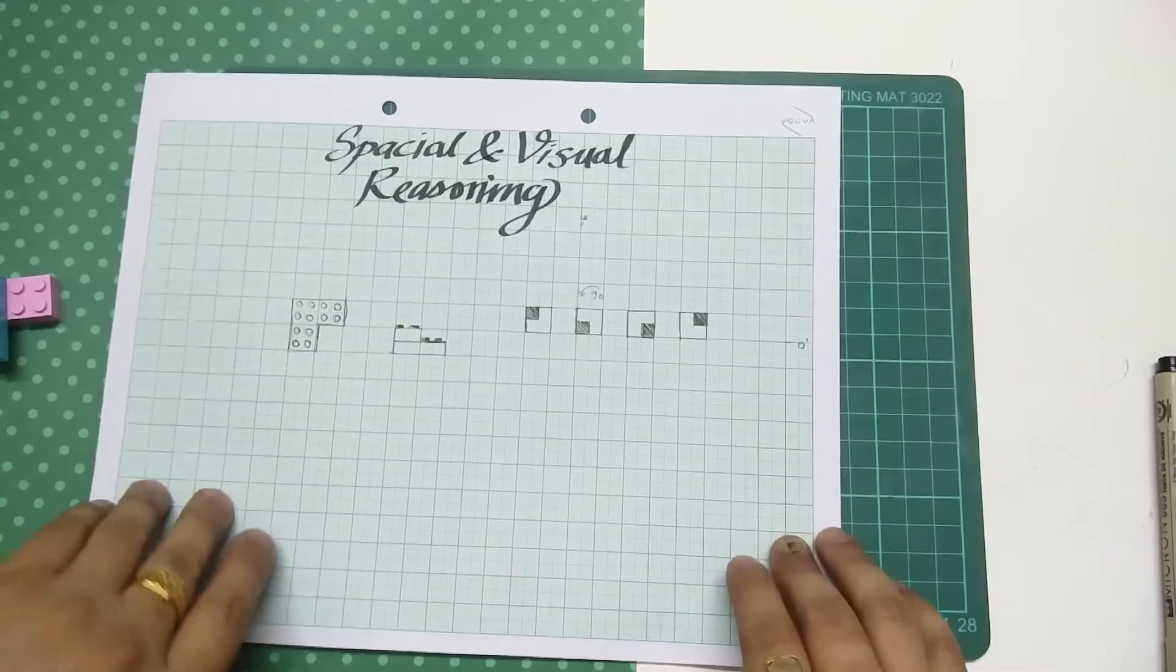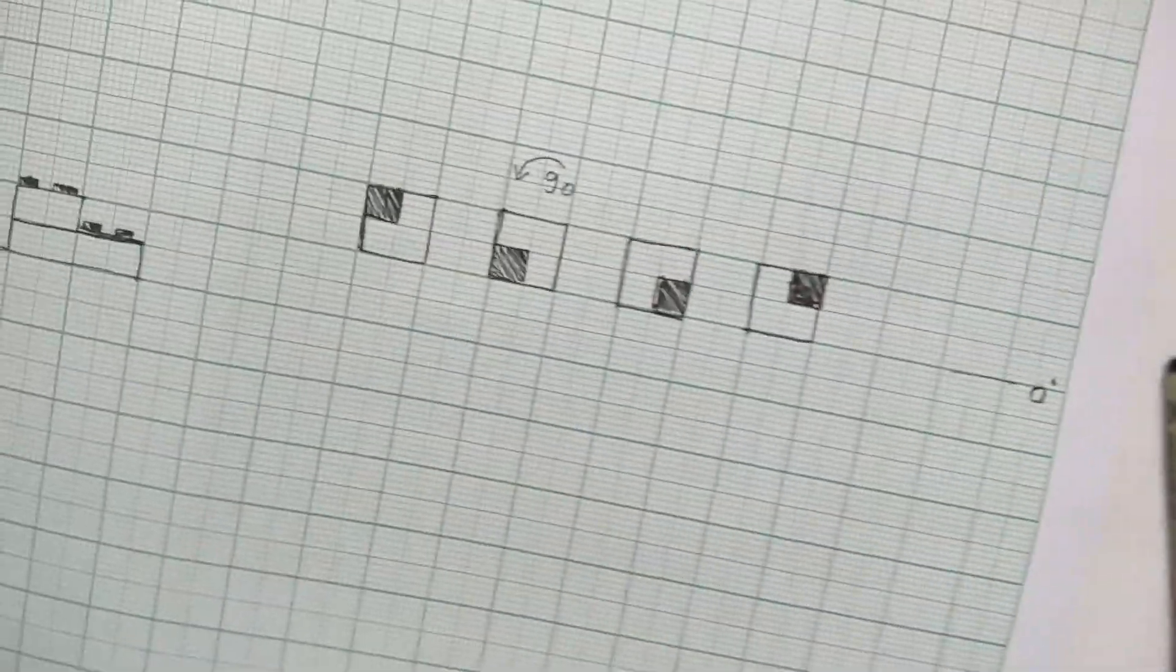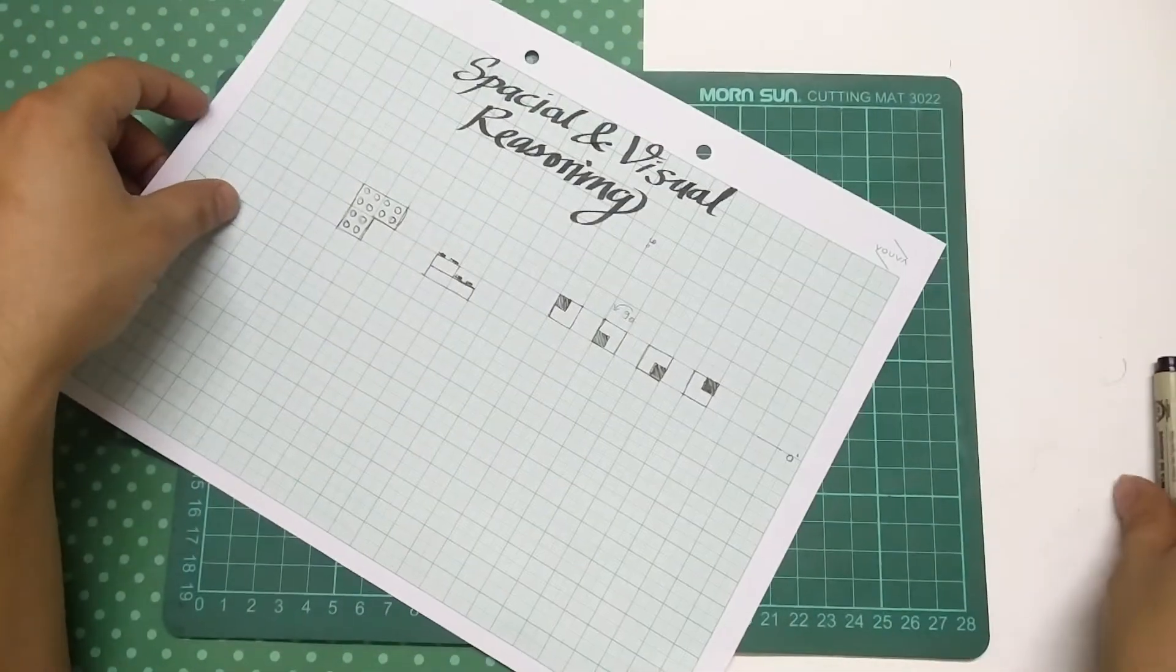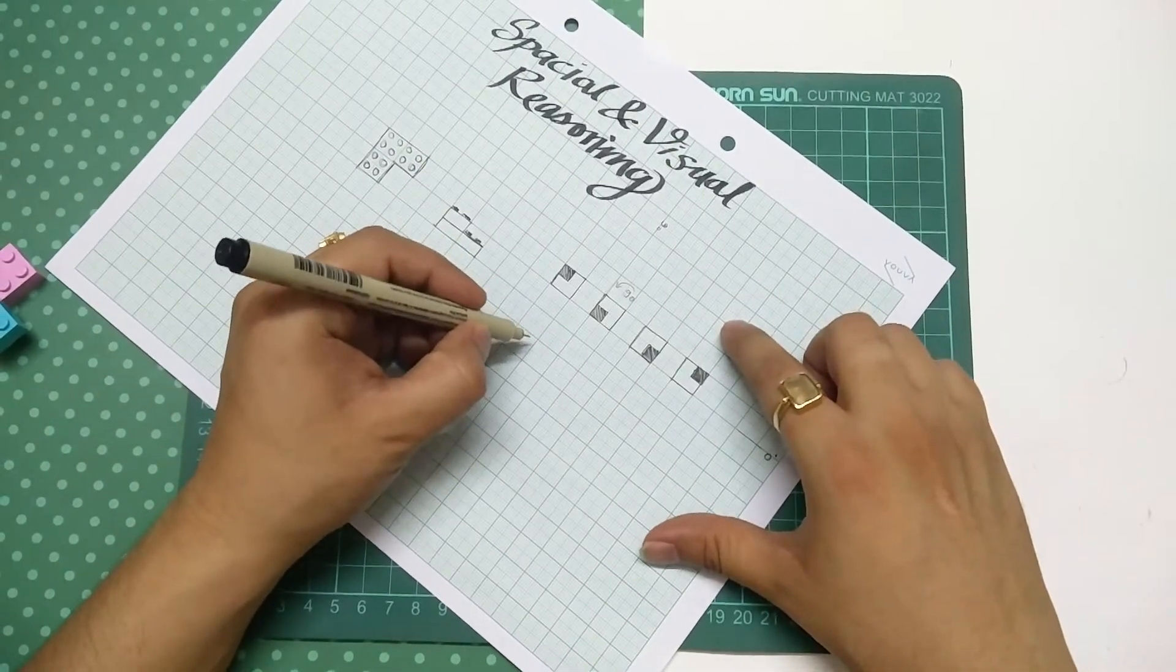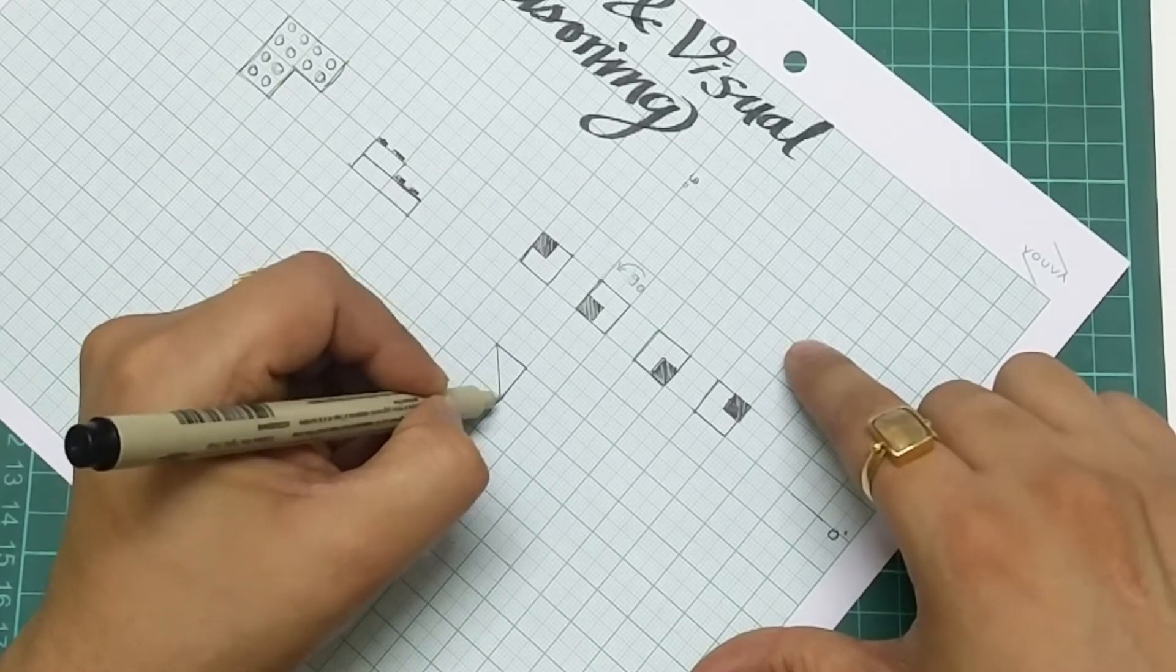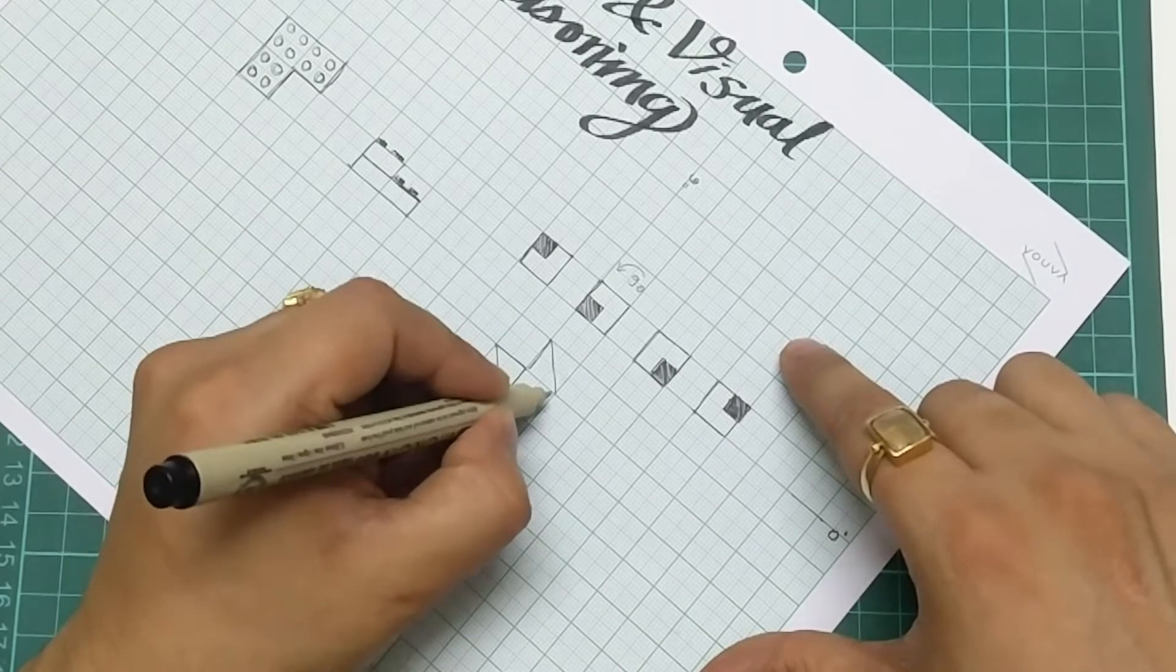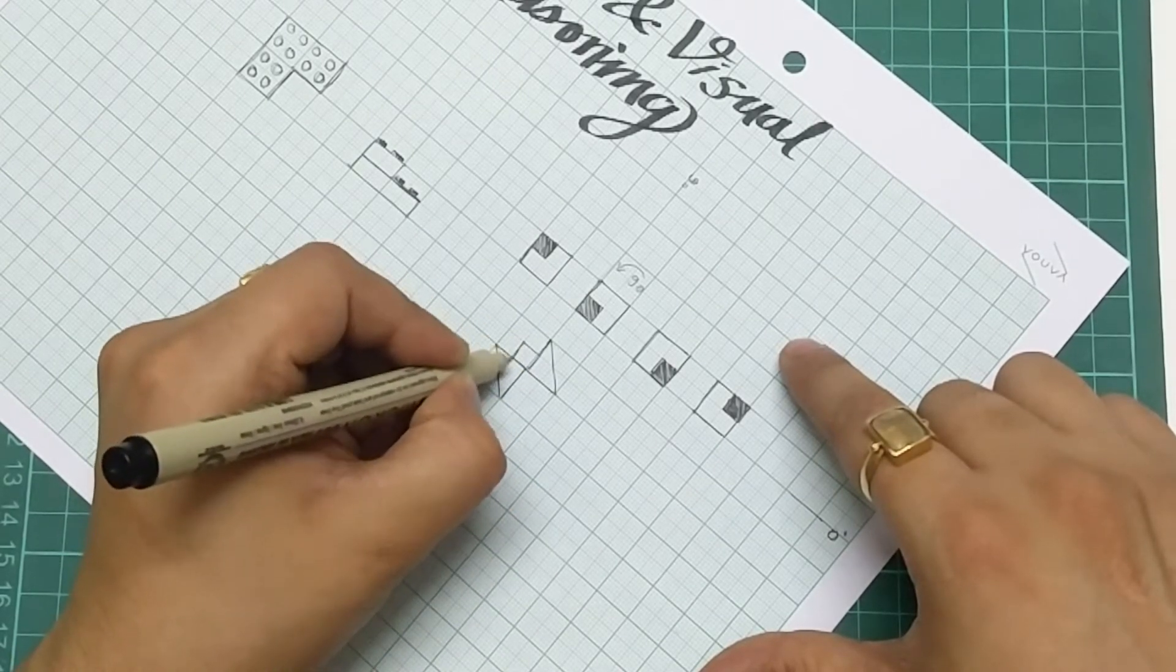So this is how you can use graph paper to understand different types of rotations, flipping, changing angles, and all those questions. This is a very fun activity, and you can play around as much as you want creating these boxes or creating any shape. Something like this—let's say I create a shape like this.